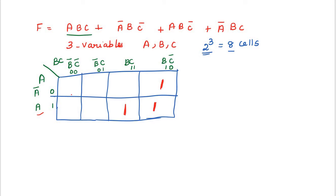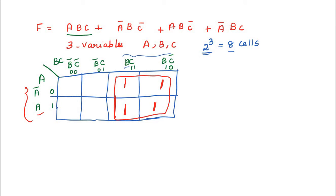For both cases we get the same minimized expression F = B. These are the results of the K-map minimization. Both Boolean law and K-map give the same minimized expression.